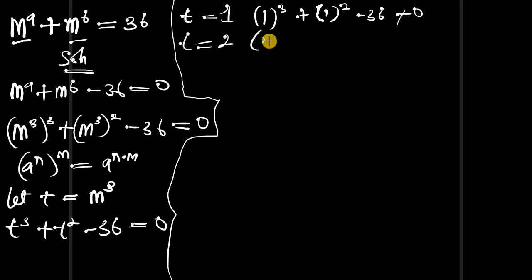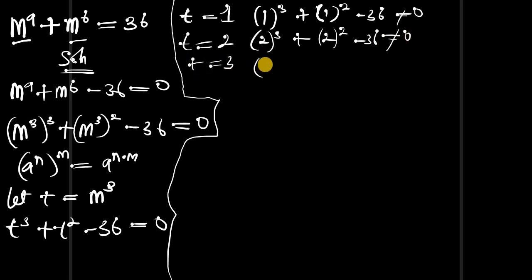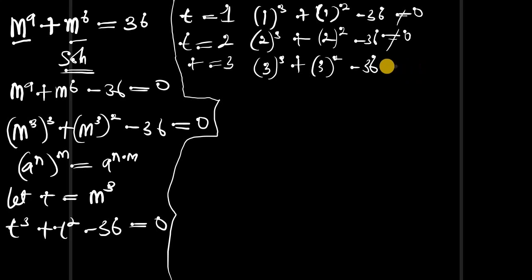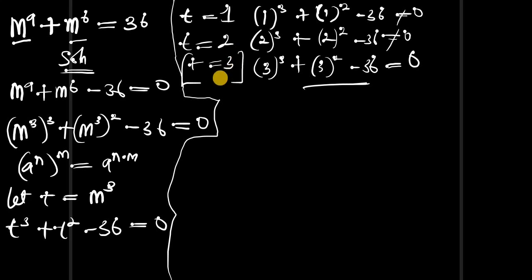For t equals to 2: 2 power 3 plus 2 power 2 minus 36 — this is not equal to zero. For t equals to 3: 3 power 3 plus 3 power 2 minus 36. This is 27 plus 9, which equals 36, and 36 minus 36 equals zero. So t equals 3 actually satisfies this equation, meaning t equals 3 is one of the real solutions.